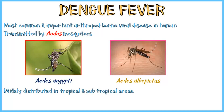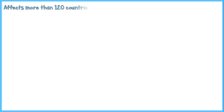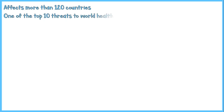And most recently, in more temperate areas. Dengue is a serious disease which affects more than 120 countries in the world. In 2019, it was named as one of the top 10 threats to human health by the World Health Organization.